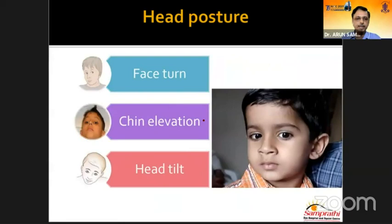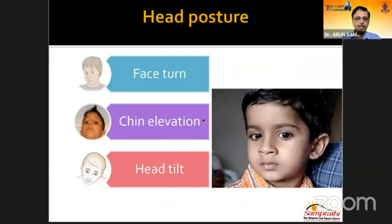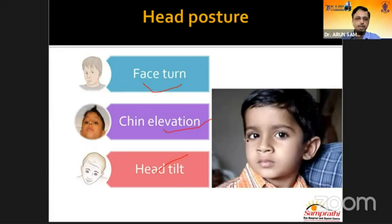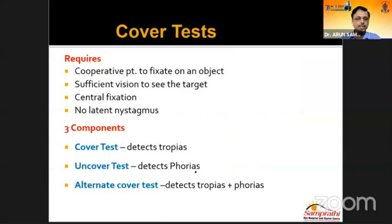Coming to the motility examination, the first thing we notice is the head posture, which has three components: face turn, chin elevation, and head tilt. Many times this head posture itself gives a clue to the differential diagnosis. The second step is the cover test, which requires a cooperative patient with good central fixation. It has three components: the cover test, the cover-uncover test, and the alternate cover test.